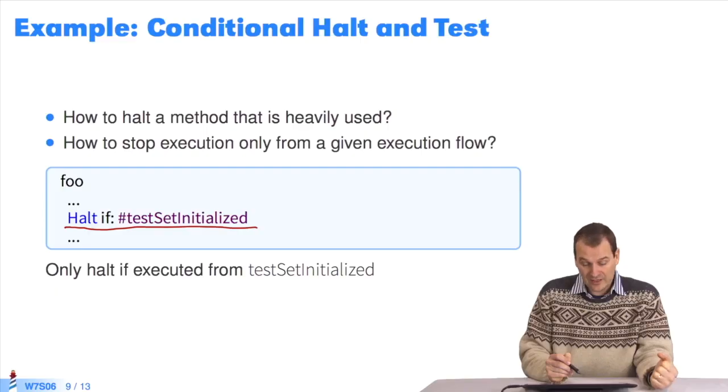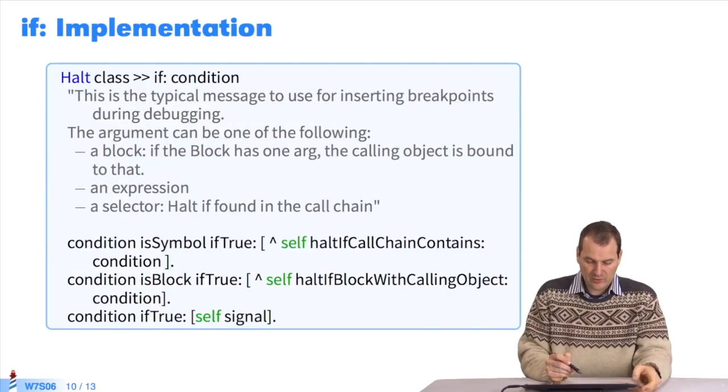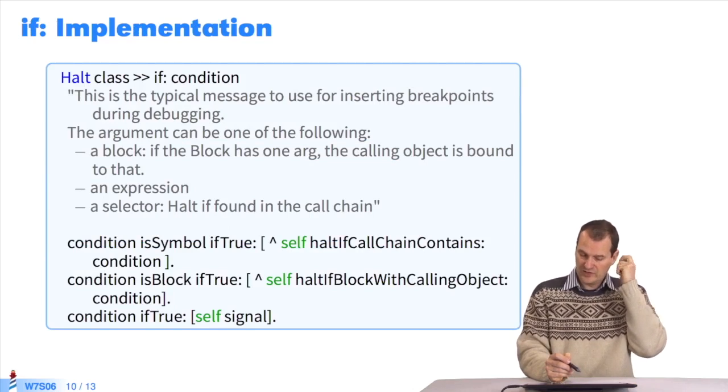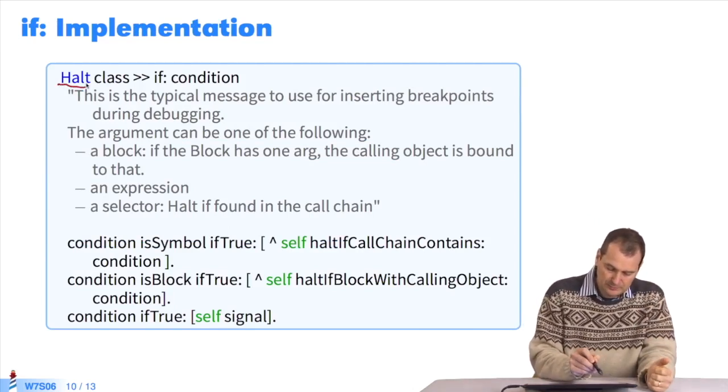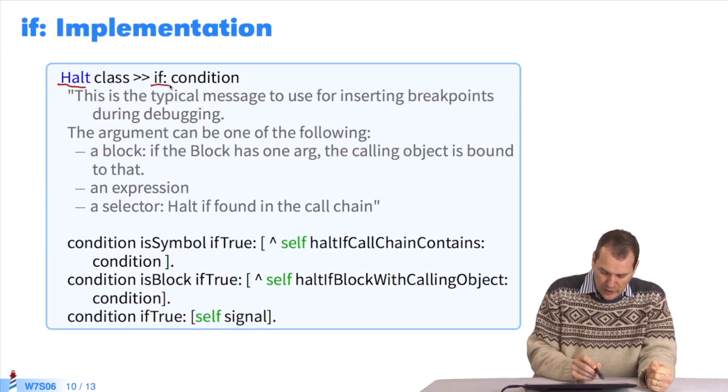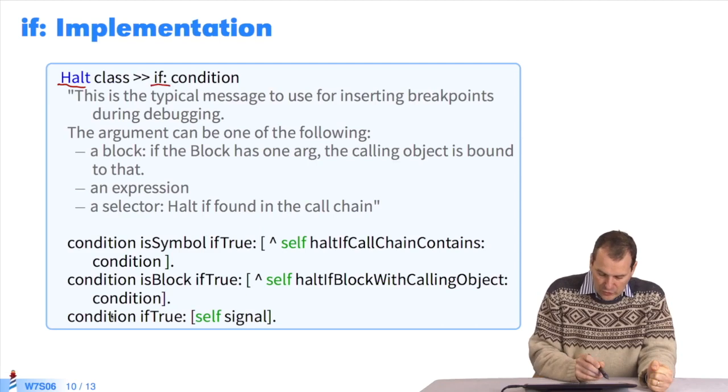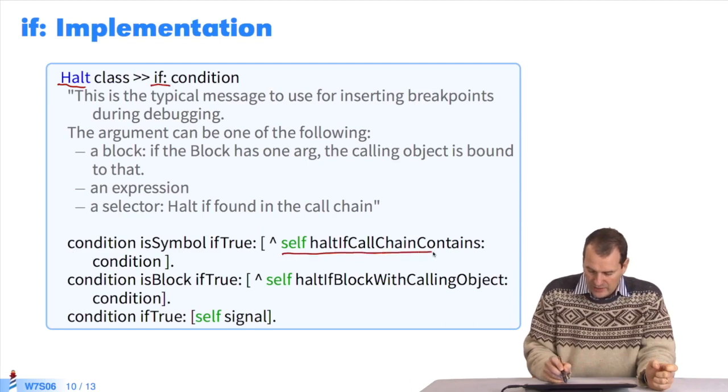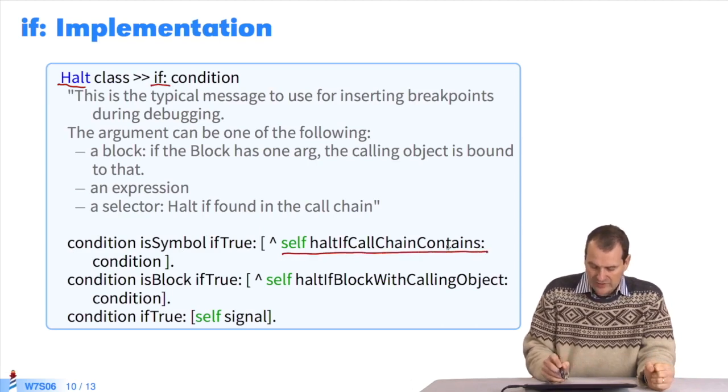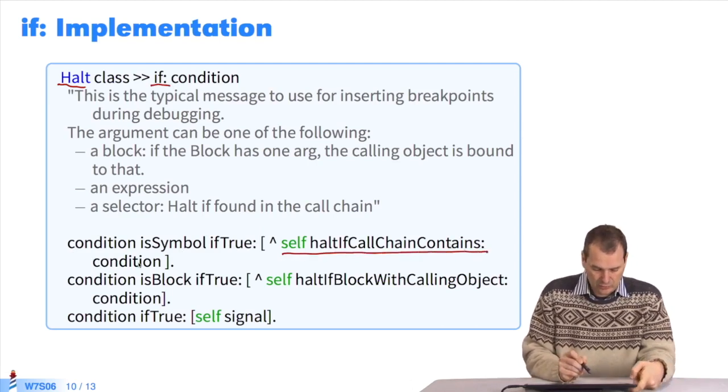How do we implement this? Usually, this method must not be halted. You can open the code in Pharo to see how it's implemented. So, halt throws an exception by showing the message if. We have several argument options. In a case involving a symbol, we pose a query to confirm it's true. We look to see if the call chain contains the symbol. Let's check.